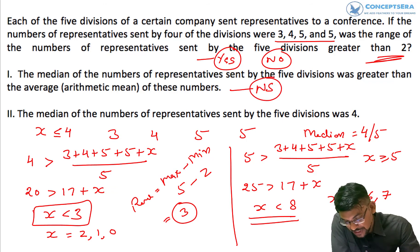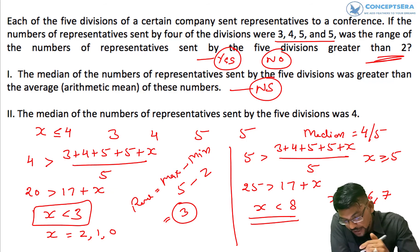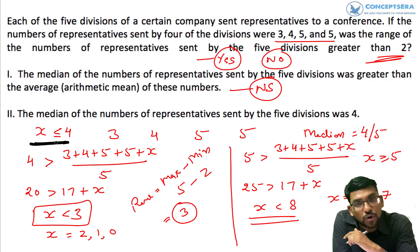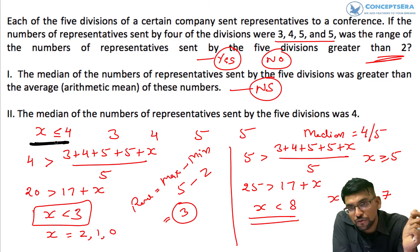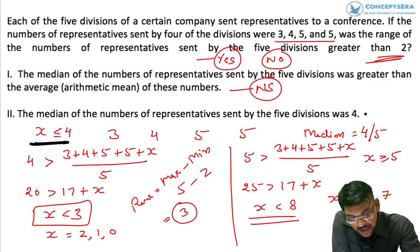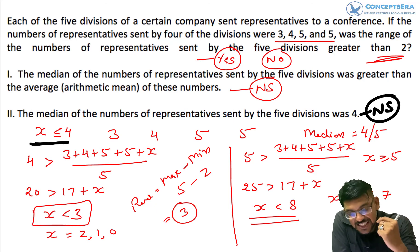Looking at the second statement: the median of the number of representatives sent by the 5 divisions was 4. This means x can be less than or equal to 4, so x can be 4, 3, 2, 1, or 0. Again, we cannot decide from here whether the range is greater than 2. So the second statement is also not sufficient.